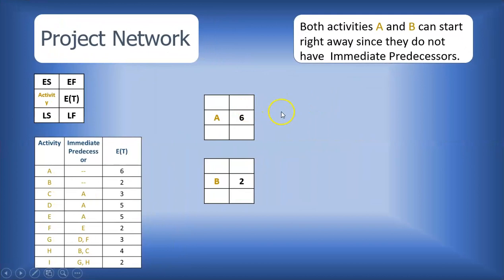So here we go. We are beginning the network. We noted already that since activities A and B do not have immediate predecessors, they can begin right at the start of the project. So here we have them, activities A and B, starting our network diagram.